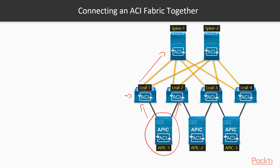The leaves are connected to the spines - one link to spine one and another link to spine two. We want to make sure we have redundancy on both the APIC side and the leaf side. Let's review what we discussed in section one about how to connect everything together.